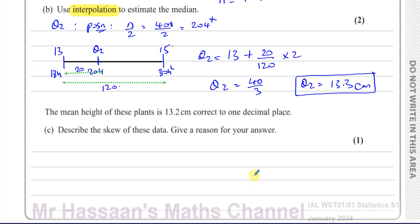Now for part C, it says the mean height of these plants is 13.2 centimeters correct to one decimal place. Describe the skew of these data. Give a reason for your answer. So we can see the mean, which we give the symbol mu, is 13.2 centimeters correct to one decimal place. And the median value is 13.3 centimeters. This is correct also to one decimal place or 3 significant figures. What we can see is, what we could say here is that they're basically almost the same. We can say that the mean is almost the same as the median. Therefore, we can say little or no skew. So this is probably the better answer.